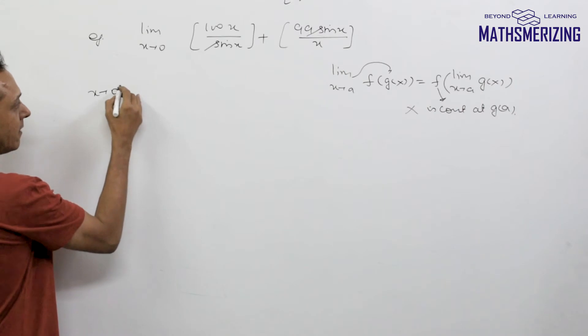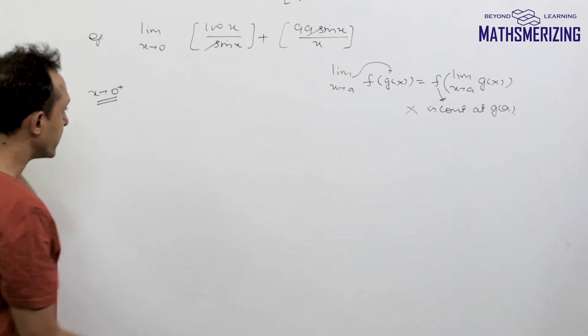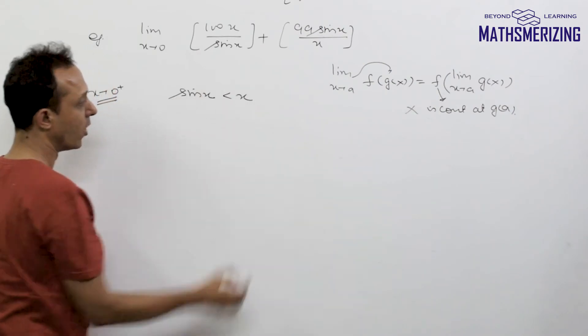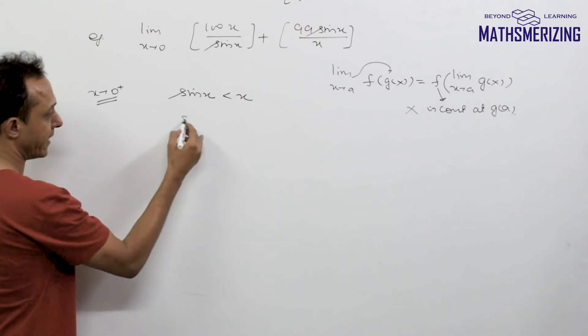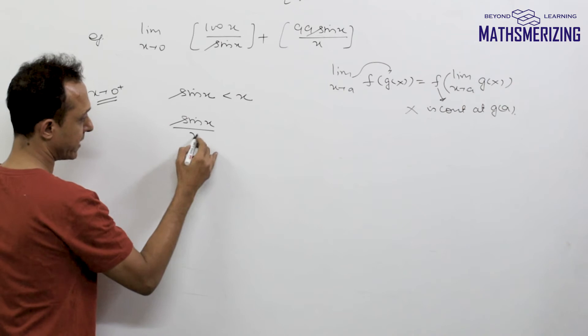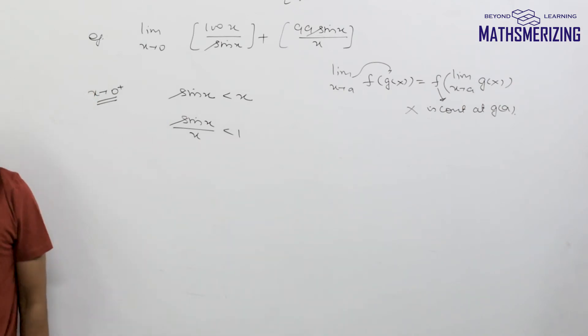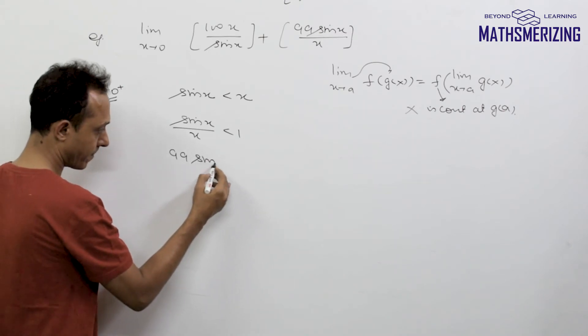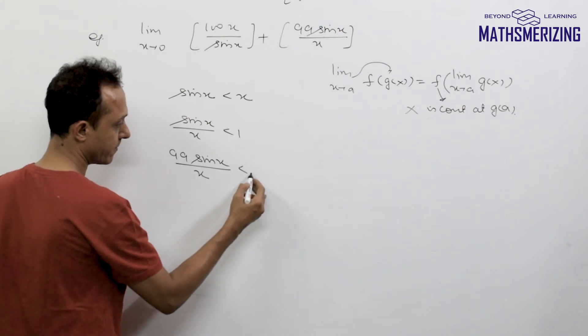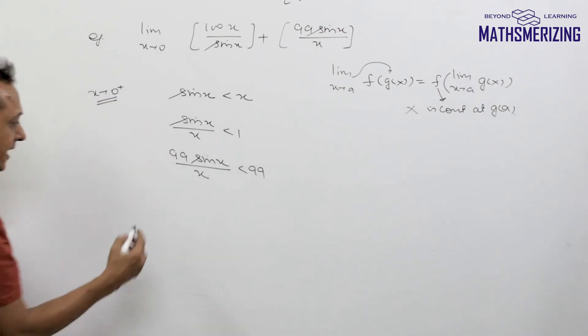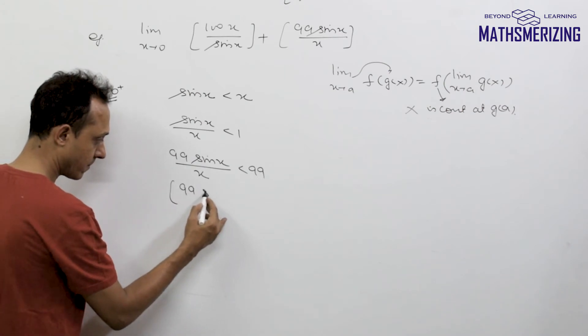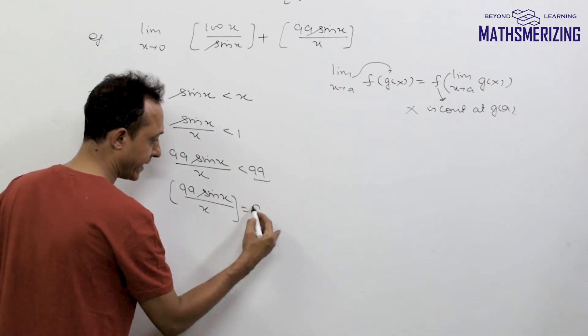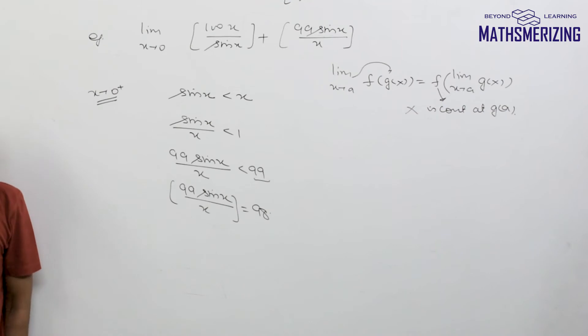Using calculus and inequalities, I know that sin(x) is always less than x, so sin(x)/x is always less than 1. If I multiply by 99, then 99sin(x)/x is less than 99. If I take the greatest integer function, because it is less than 99, this value will be simply 98.